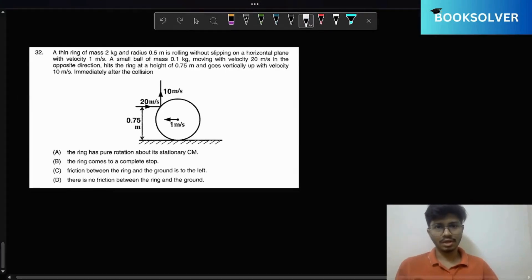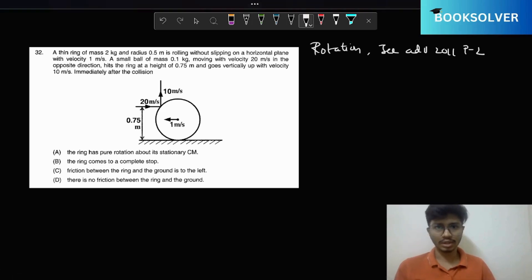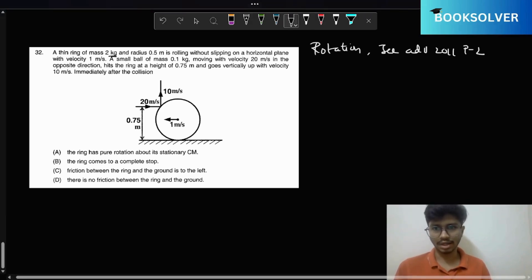Hey everyone, the given question is from the topic of rotation. The question is from JEE Advanced 2011 Paper 2. In this question we have a thin ring of mass 2 kilograms and radius 0.5 meters, and it is rolling without slipping on horizontal plane with velocity 1 meter per second.